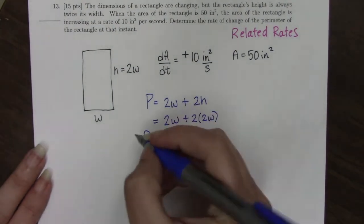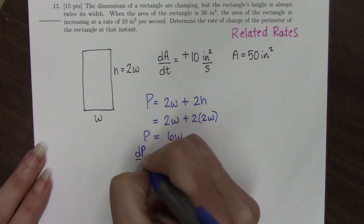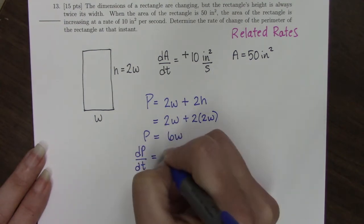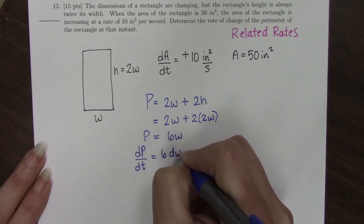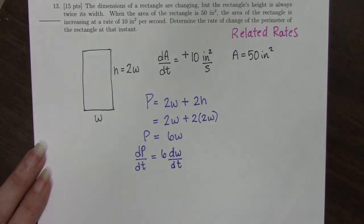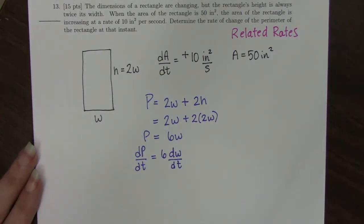So when I take the derivative of this, dP/dt will equal 6 dW/dt. Now, notice I was not given anything about dW/dt. I was given information about area. So what I'm going to do is build an area equation and see if there's a way I can figure out what dW/dt is.